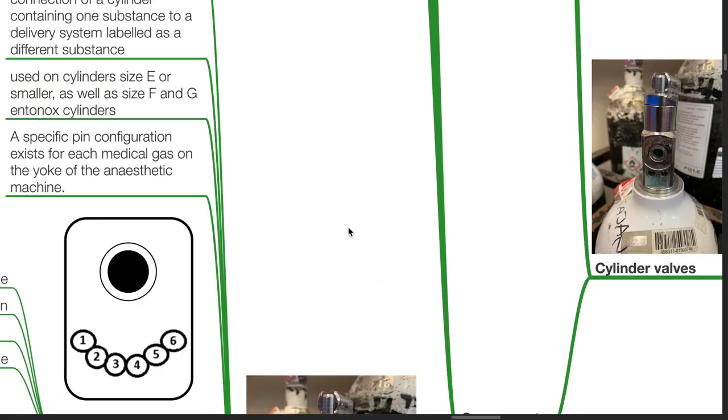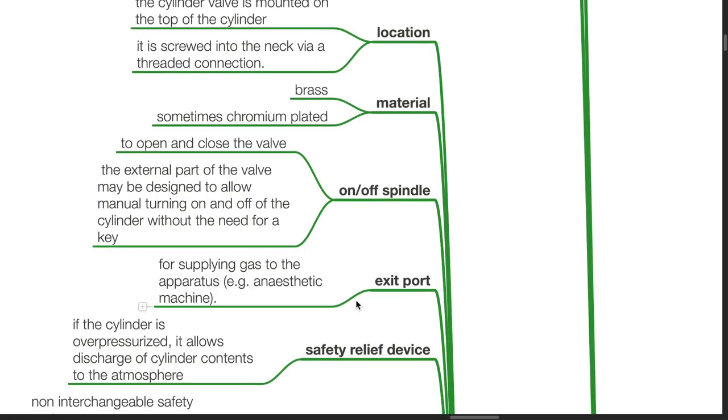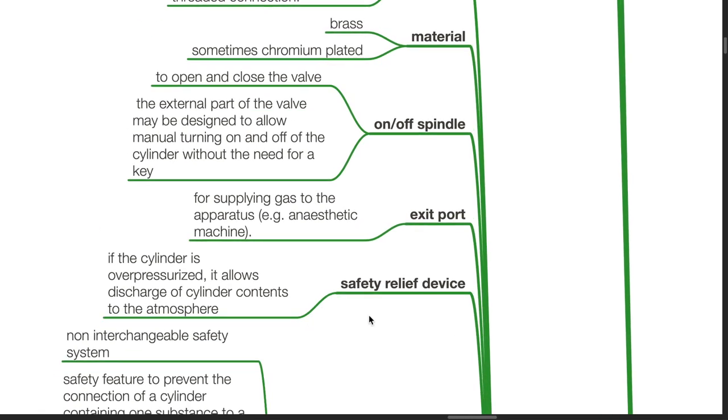Components of the cylinder valve: It is located at the top of cylinder, screwed into the neck of the cylinder via a threaded connection. It is made of brass and is sometimes plated with chromium. There is an on-off spindle to open and close the valve. The external part of the valve may be designed to allow manual turning on and off of the cylinder without the need of a key. Exit port for supplying gas to the apparatus such as an anesthetic machine. Safety relief device: If the cylinder is over pressurized, it allows discharge of the cylinder contents to the atmosphere.